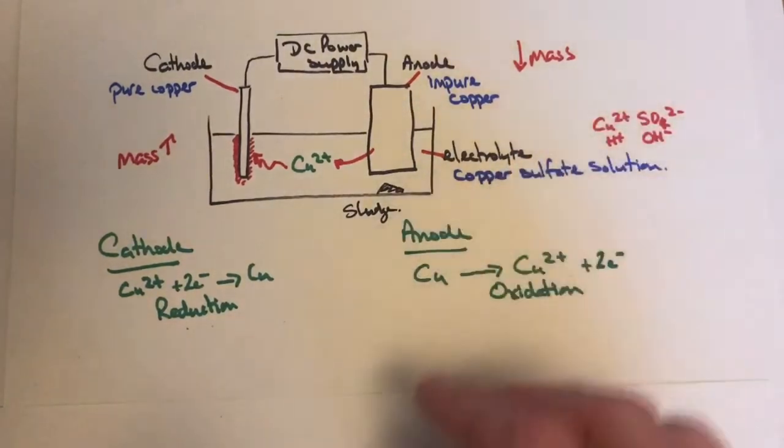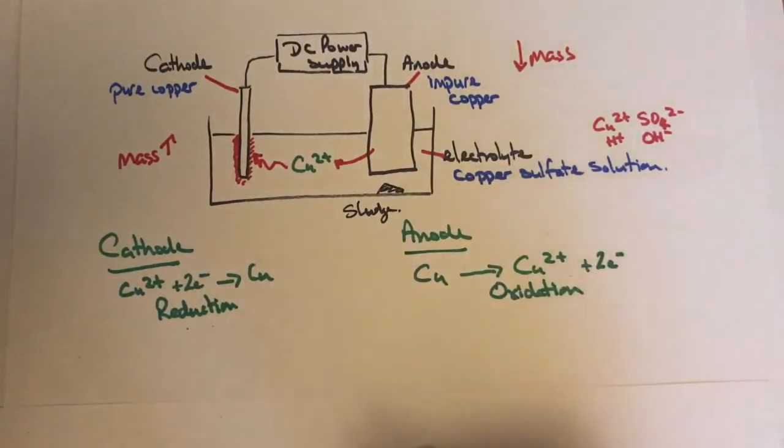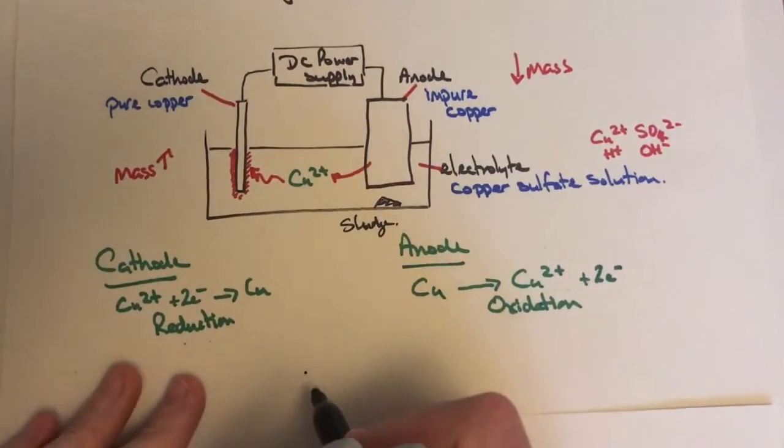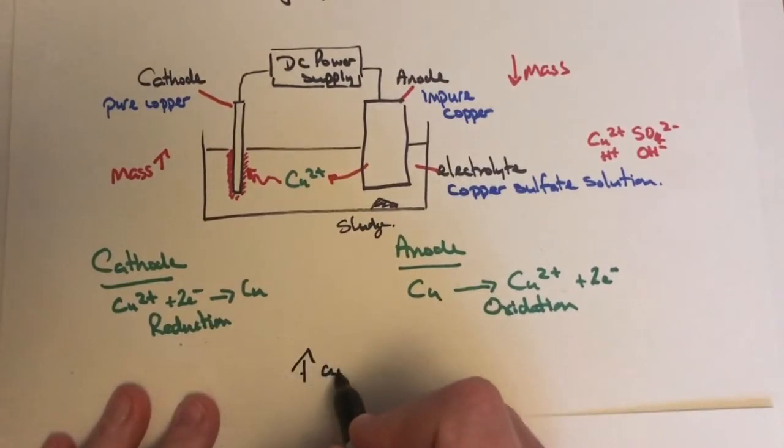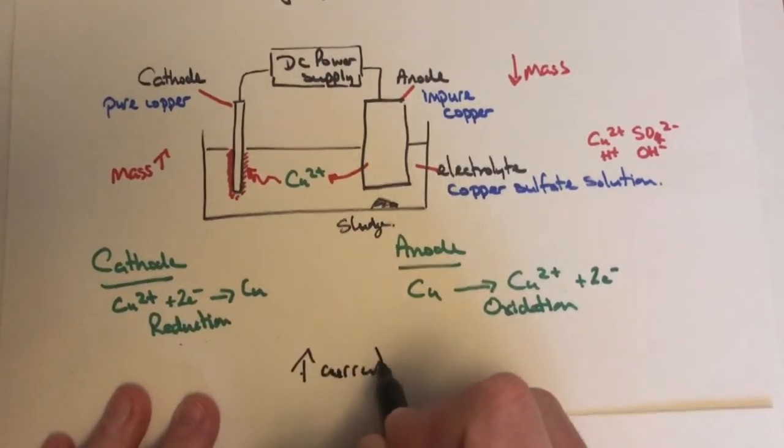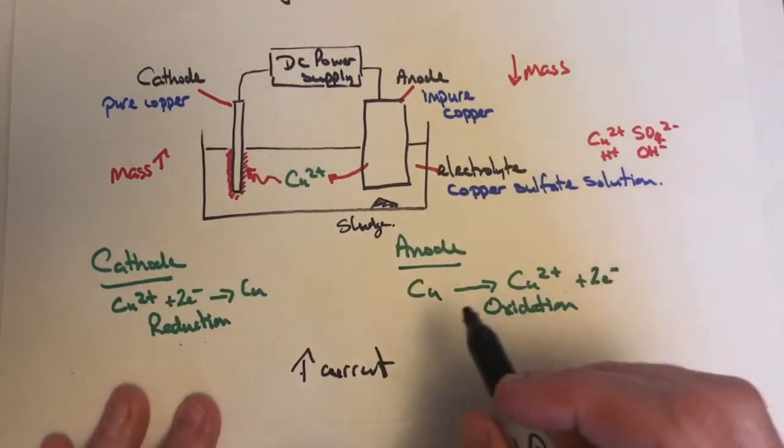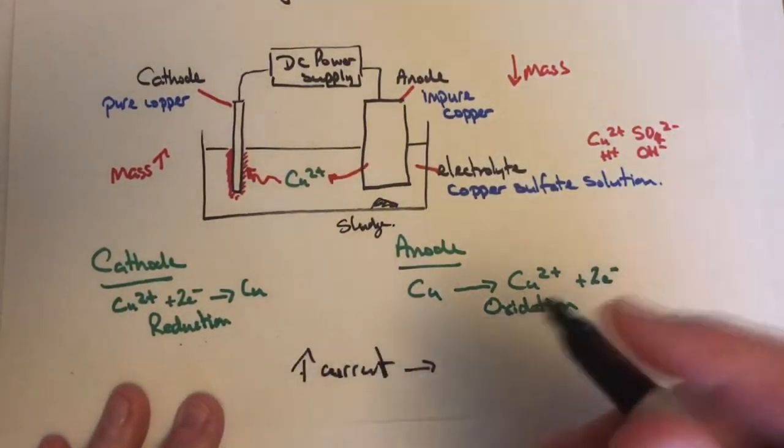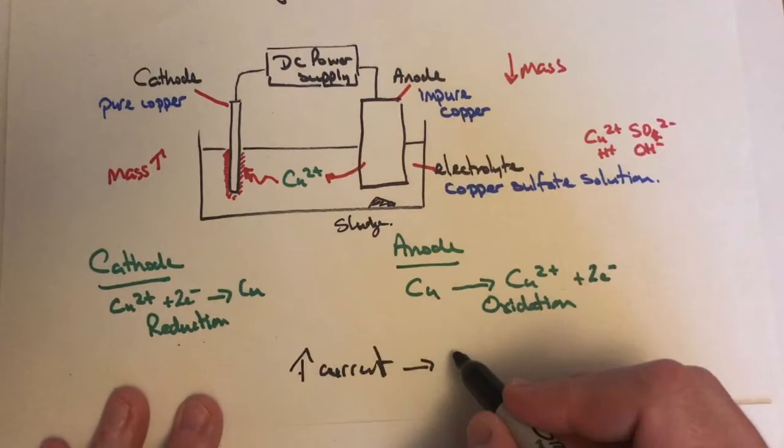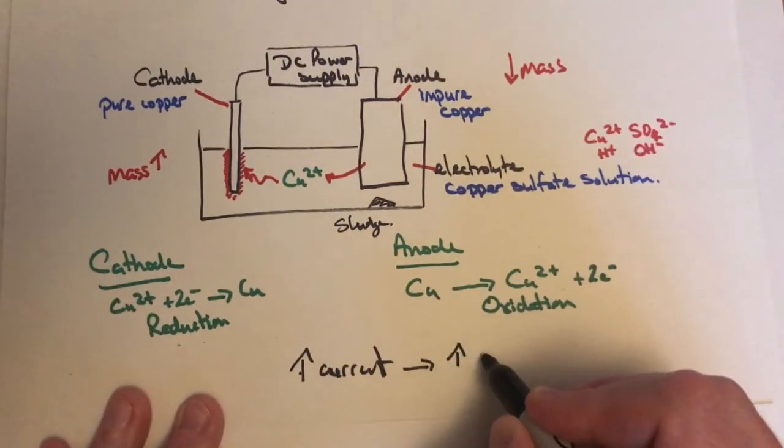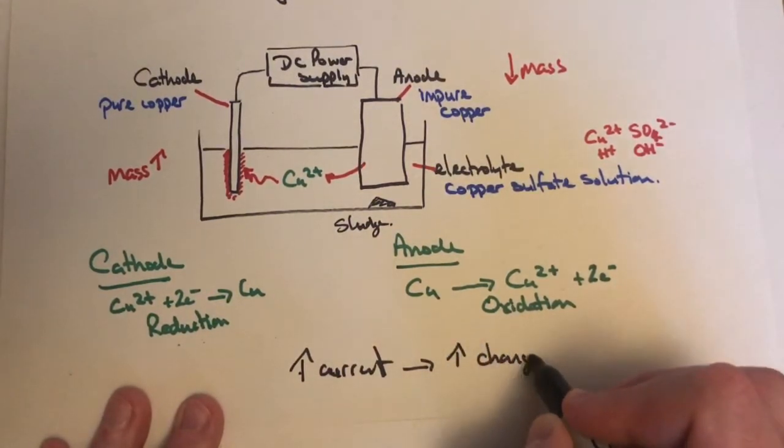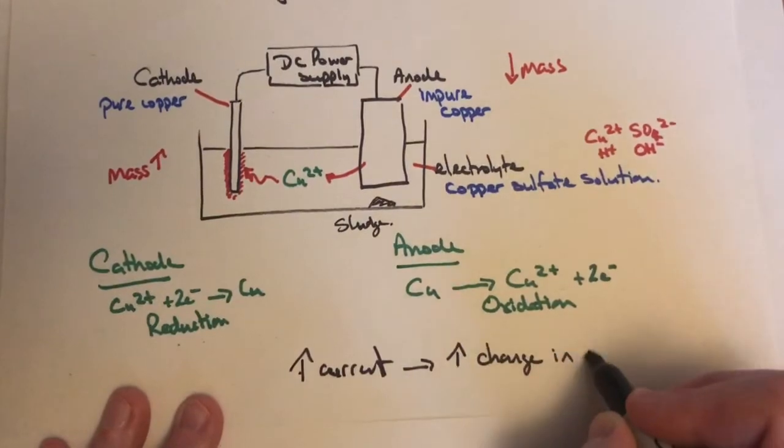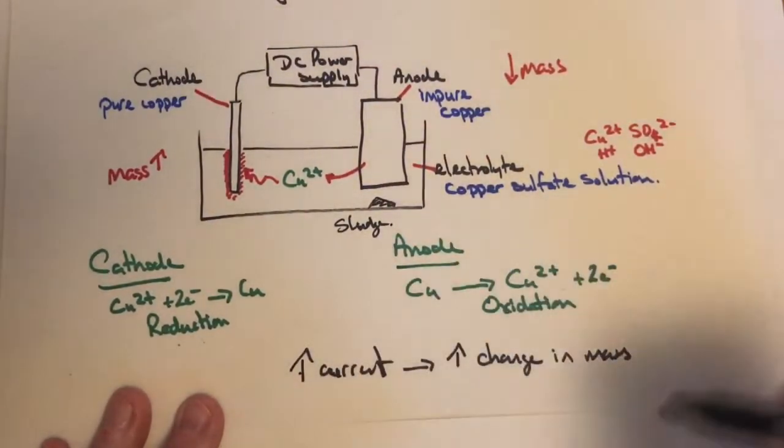Things that affect this: If I increase the current from the DC supply, more electricity flows and I get a greater change in mass. More current means more electrolysis is happening, so more ions form copper metal and the mass increases by a greater amount.